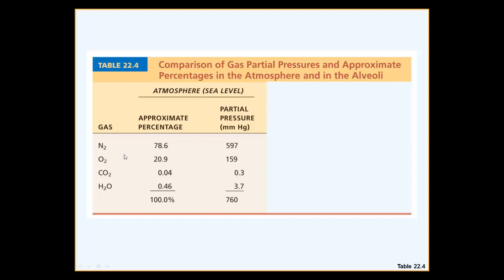To summarize: nitrogen is approximately 80% in the air, so its partial pressure is approximately 600 mmHg. Oxygen is about 21%, giving a partial pressure of 160 mmHg. Carbon dioxide is negligible — its partial pressure in the atmosphere is approximately 0.3 mmHg. For water (H2O), the partial pressure is approximately 3.7 mmHg, allocated to the percentage of water vapor in the air.